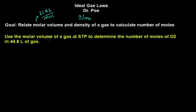So we're going to use the molar volume of a gas at STP, that's the definition I missed up there, has to be at standard temperature and pressure, to determine the number of moles of O2 in 44.8 liters of the gas. So we want the number of moles.